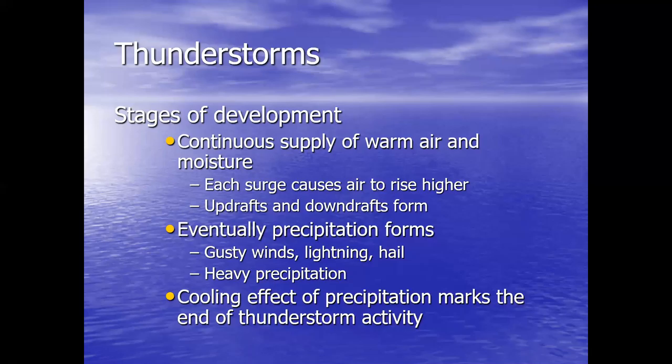Eventually precipitation will form. There are usually gusty winds associated with the thunderstorm, and there can be lightning, hail, and very heavy precipitation. The cooling effect of precipitation marks the end of thunderstorm activity.